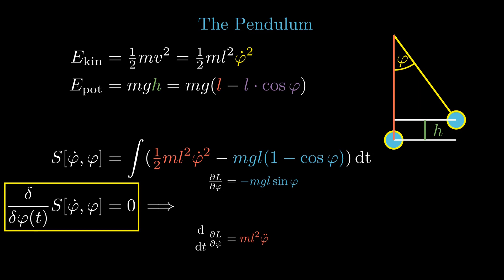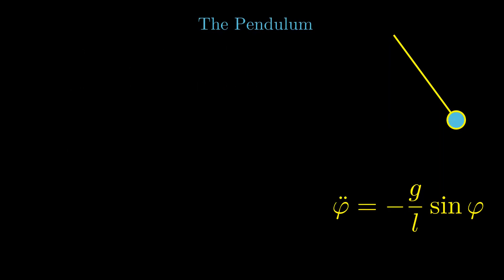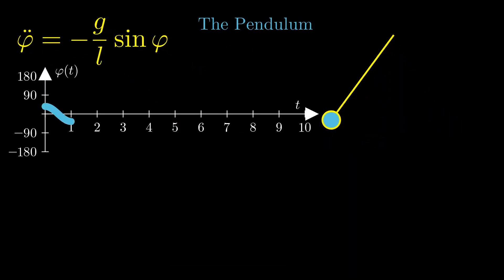This differential equation captures all the dynamical features that you can expect for such a pendulum. For small displacements, you will recover a harmonic oscillation back and forth around the equilibrium position.